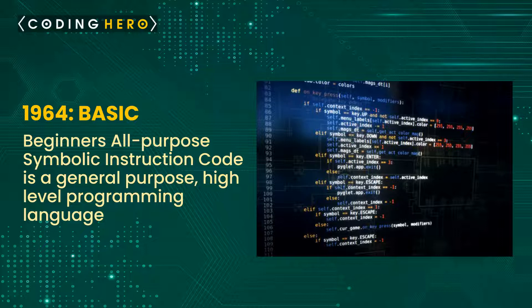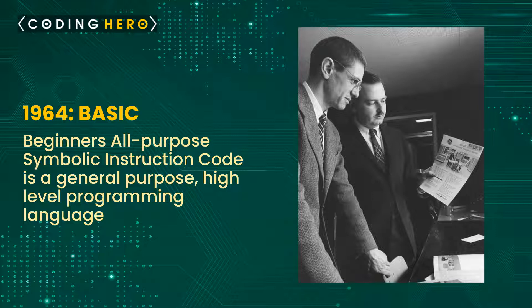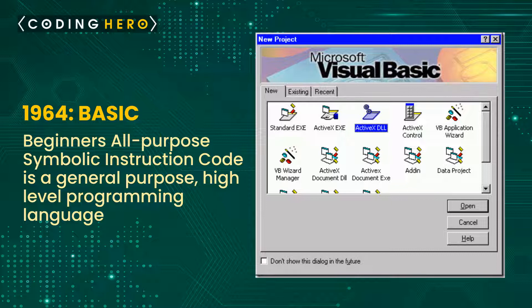In 1964, BASIC — Beginner's All-purpose Symbolic Instruction Code — was introduced. It is a general-purpose high-level programming language developed by John G. Kemeny and Thomas E. Kurtz at Dartmouth College in 1964, with an aim to enable students in non-scientific fields to use computers. In 1991, Microsoft released Visual BASIC, an updated version of BASIC. The first microcomputer version of BASIC was co-written by Bill Gates, Paul Allen, and Monty Davidoff for their newly formed company, Microsoft.